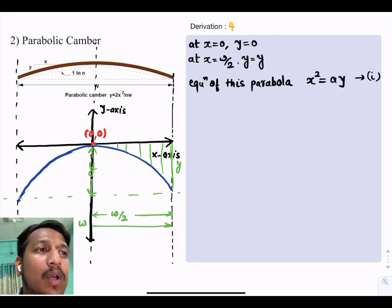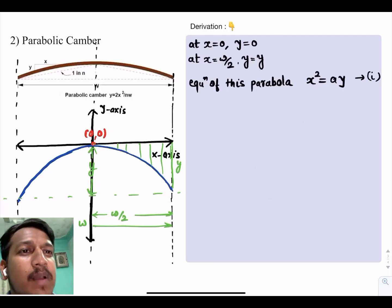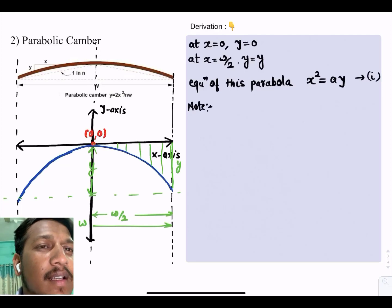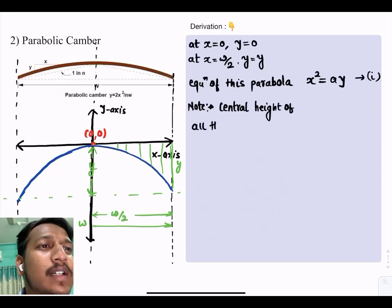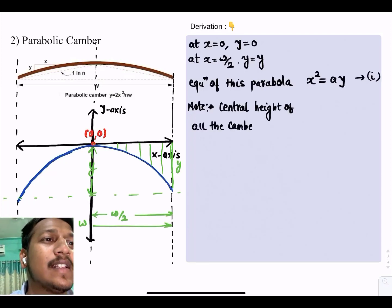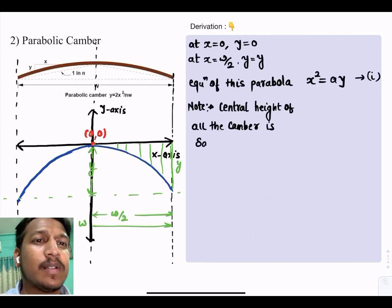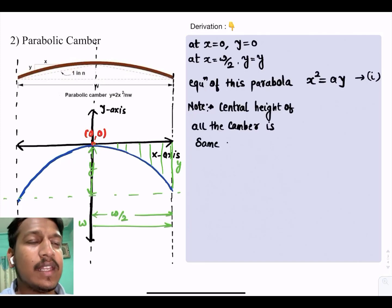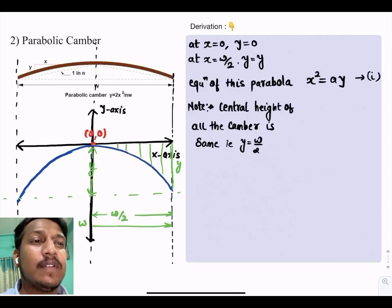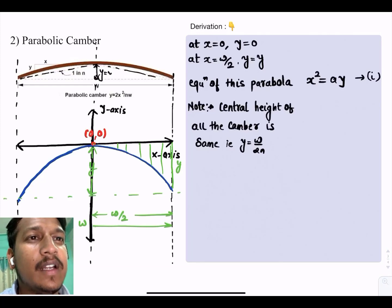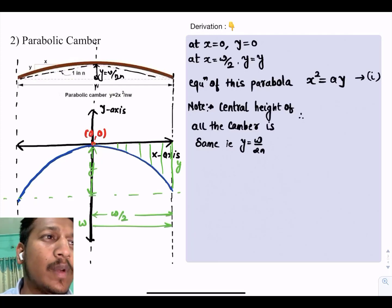The equation of this parabola is x square equals a y. Note that central height of all the camber is same, whether it is straight line or parabolic or combined. That is y equals w divided by 2n, which is shown in the figure.